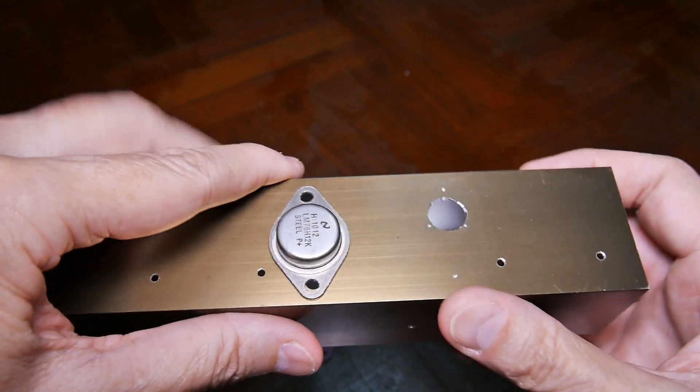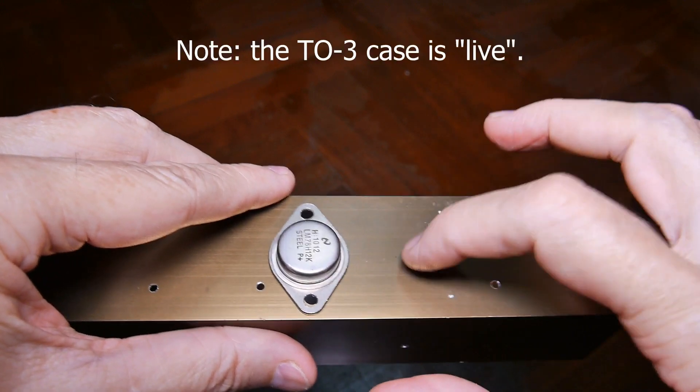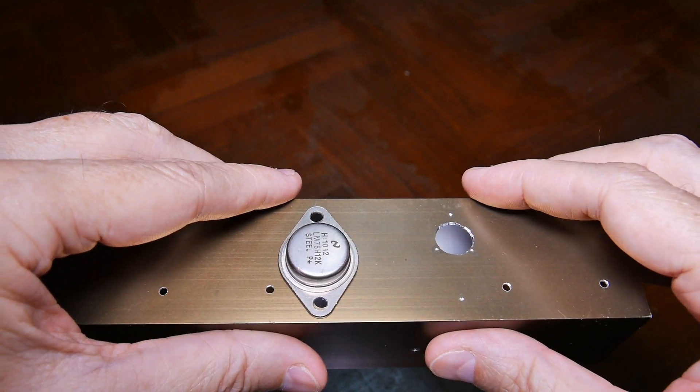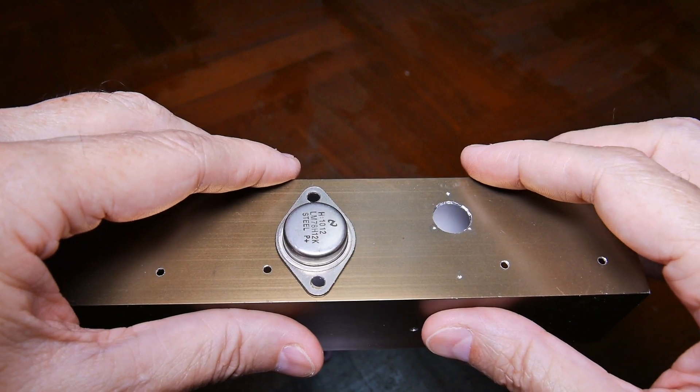But there's one other trick here. As I said the case is one of the connections. So if I mount this directly to this piece of aluminum, the aluminum becomes part of the circuit and I don't want that. So what we need to do is we need to add another component and let me show you that.